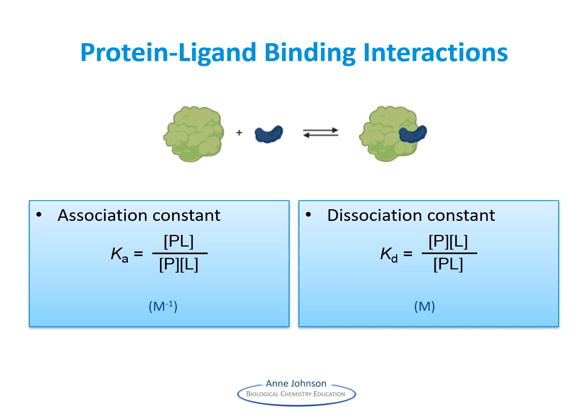Protein ligand binding is an equilibrium phenomenon. We can measure the equilibrium position either as an association constant or as a dissociation constant. Association constants are used by chemists, while biochemists typically use dissociation constants. The units for dissociation of the protein ligand complex are in moles per liter.